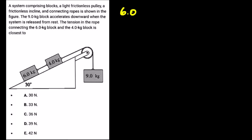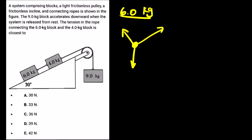Let us start with the 6.0 kg block, looking at the free body diagram. We have the normal force, we have FG, and then we have tension. Let us say this is T1 and this would be T2, since we have two ropes between three objects. This T will be T2. Since the incline is frictionless, it means that we don't have kinetic friction. So basically this is the free body diagram of the 6.0 kg block.